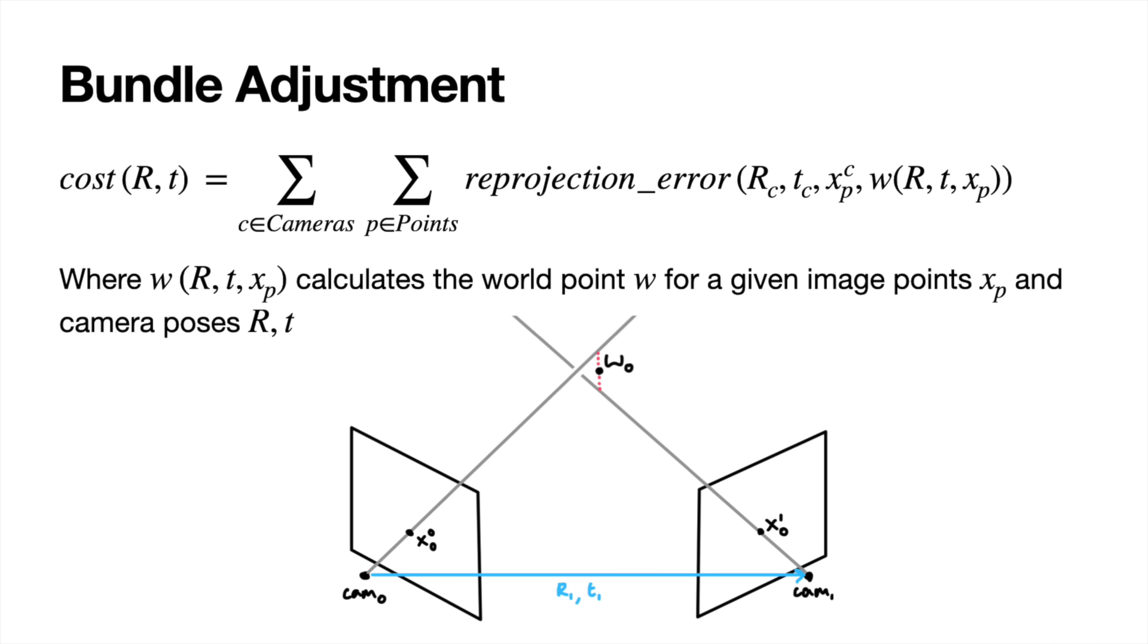Basically, two cameras will see a point, and instead of their rays intersecting exactly in the same place, they miss slightly. And this distance between the two rays is something called the reprojection error, shown here in red.